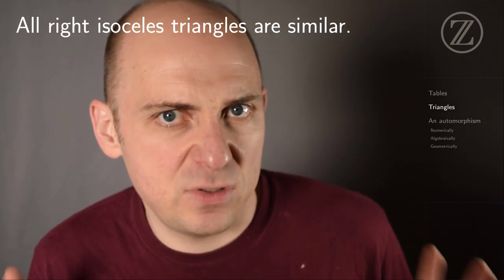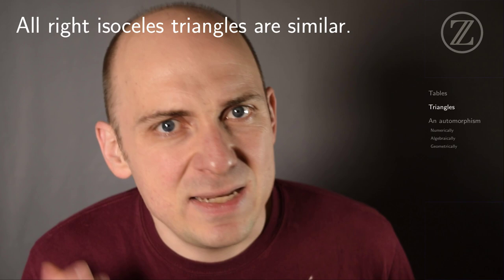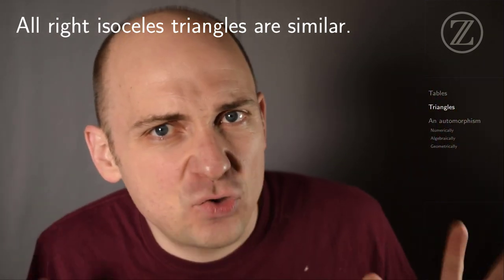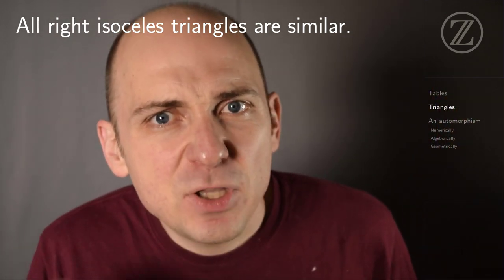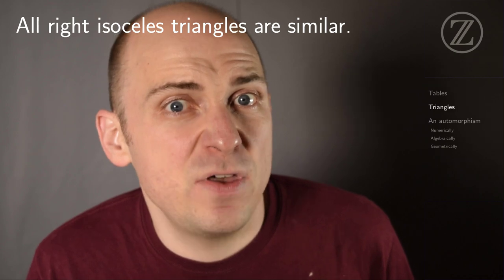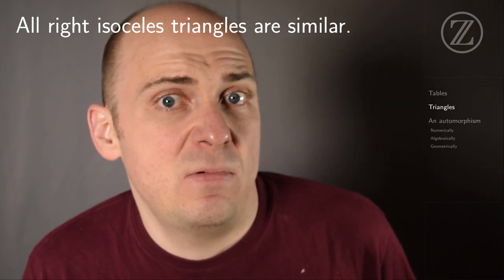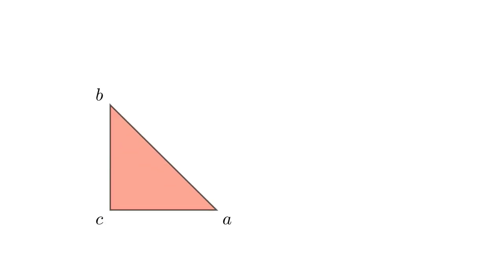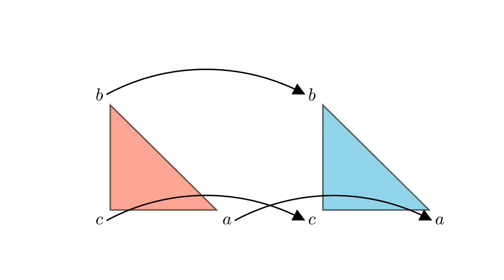All right isosceles triangles are similar. And here's a subtle point. Yes, any two right isosceles triangles are similar to each other. But they're similar to each other in more than one way. Now here's a right isosceles triangle. I pictured it in red. Here's another one in blue. And they're similar. They're even congruent, just by sending A to A, B to B, and C to C. But they're similar in another way as well. I could have sent C to C, but sent A to B and B to A.